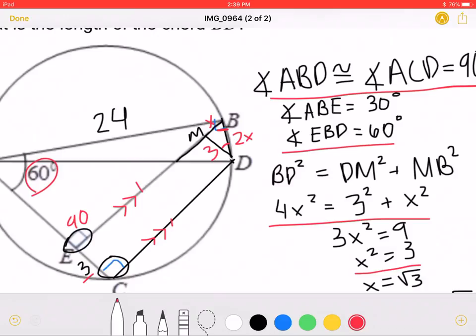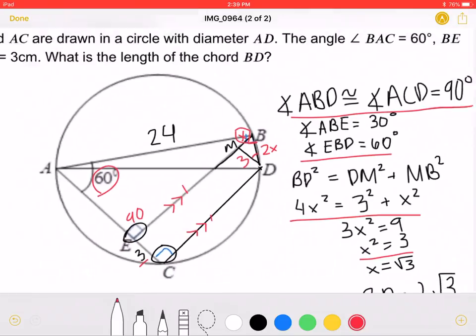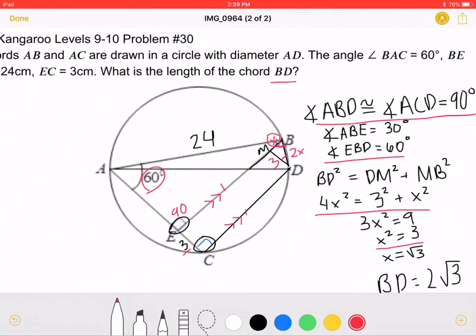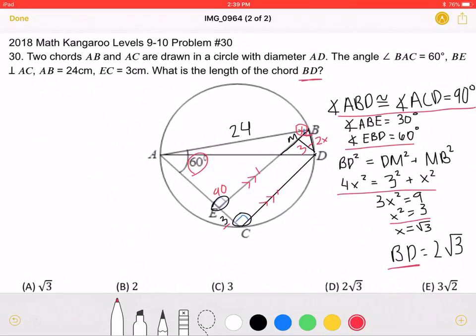However, because we are speaking about distance, we can't have negative distance, leaving the answer to be square root of 3. Again, this is MB. But the problem is asking for BD, which is equal to 2X. 2 times square root of 3 is equal to 2 square root of 3, which is answer choice D.